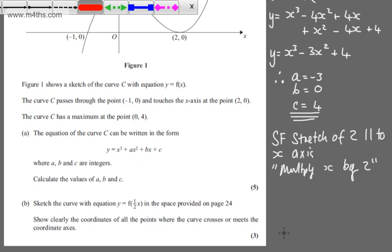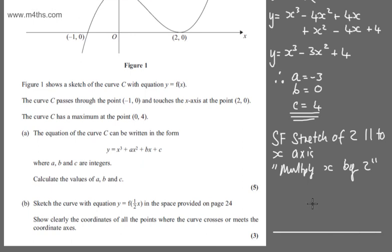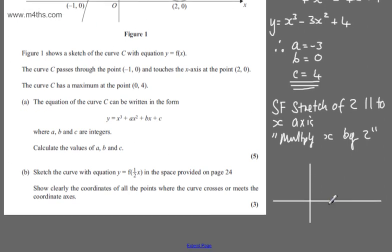So if we look at this now, quick sketch. Again, in the exam, I'd do something slightly neater. What we're going to have is this point is going to become (-2, 0). So we'll go to (-2, 0), which will be just here.